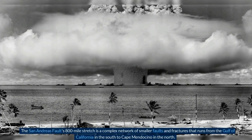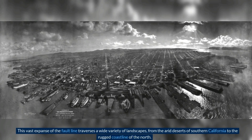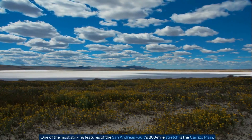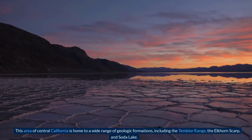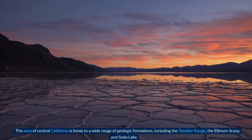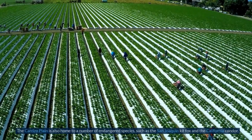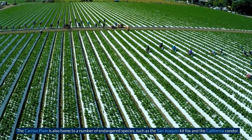The San Andreas Fault's 800-mile stretch is a complex network of smaller faults and fractures that runs from the Gulf of California in the south to Cape Mendocino in the north, traversing a wide variety of landscapes — from the arid deserts of Southern California to the rugged coastline of the north. One of the most striking features is the Carrizo Plain in Central California, home to geologic formations including the Tembler Range, the Elkhorn Scarp, and Soda Lake, as well as endangered species such as the San Joaquin Kit Fox and the California Condor.